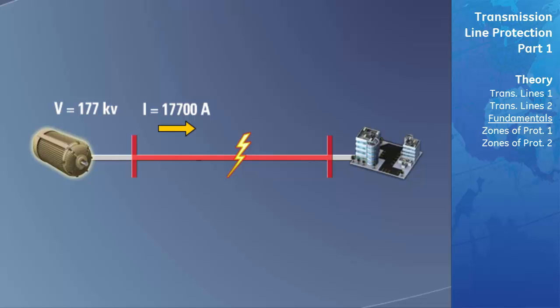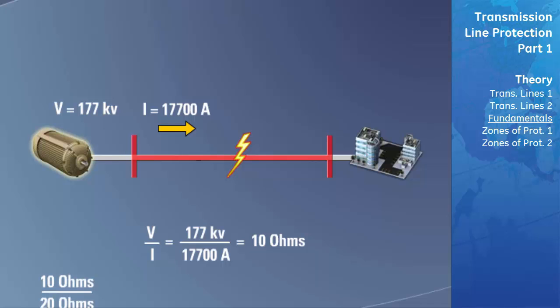By comparing the calculated impedance of the transmission line with the known impedance of the transmission line, you can determine how far along the transmission line the fault occurred, leading to the term distance or distance relaying. In this example, the current increased as a result of the reduction in impedance from 20 to 10 ohms, indicating that the fault occurred at a distance of 50 percent of the distance from the measurement point to the end of the transmission line.